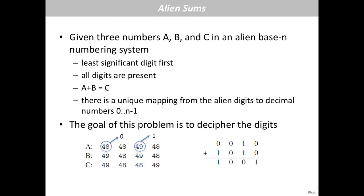The first problem is called NESR. Given three numbers A, B, and C in an alien base-N numbering system, you want to decipher the numbers — which alien digit corresponds to which decimal number. You are told the most significant digit occurs first and all digits are present. You also know the equation A plus B equals C, and there is a unique mapping from alien digits to decimal numbers. This type of question occurs quite frequently in competitions like Google Code Jam.